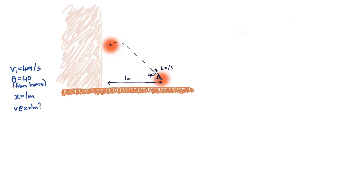We start by writing an expression for our vertical and horizontal velocities, which we can get from trigonometry. We find that Vix is equal to 4 times cos 40 meters per second, while Viy is equal to 4 times sin 40 meters per second.